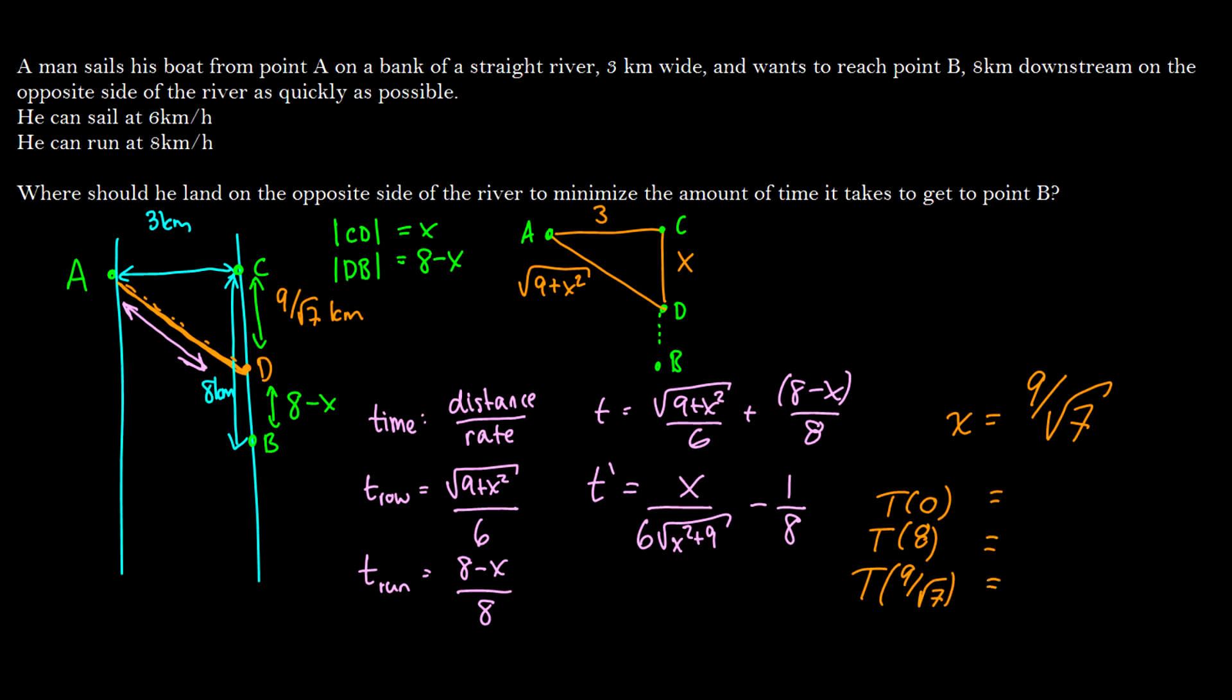So let's just plug in some values here. If we have t is equal to 0, of course, the t that I'm working with is this function right here. I'm just plugging 0 into that. If we put a 0 in there, we get 1.5. If we plug 8 into the equation, we're going to get 1.42. So it is faster to sail across the whole way and not do any running than it is just to sail across the 3 kilometers and run to B.